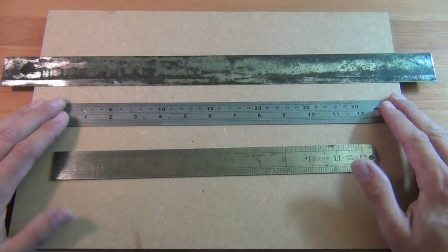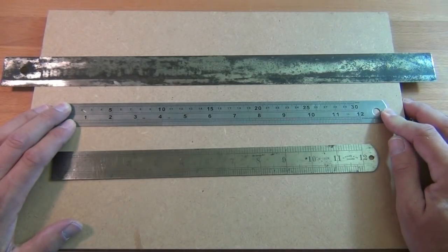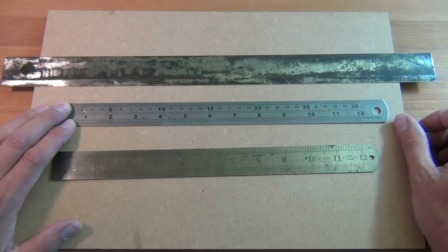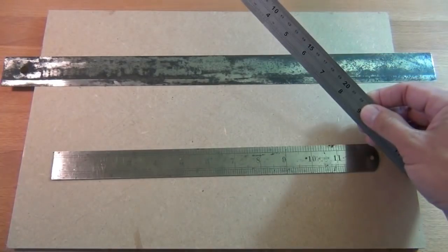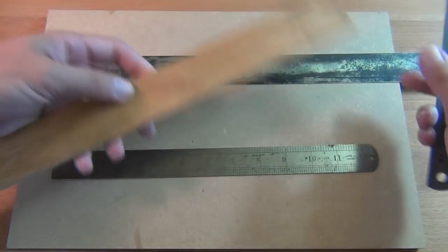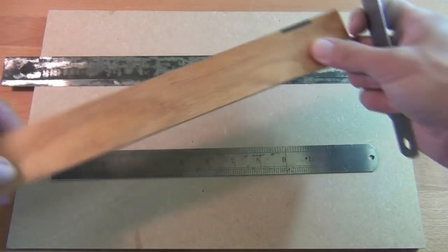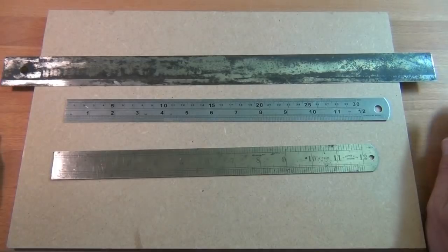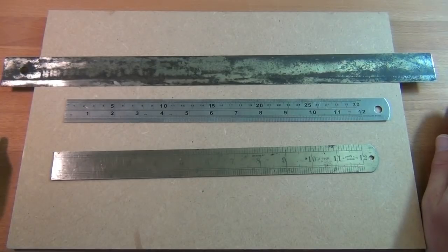Then we will have a steel rule which has two perfect straight edges on it, is parallel through its length, and we can use that to check straight edges, for example a winding stick we can now check with our ruler. And the important point about this is our reference straight edge, for as much time as possible, stays protected, wrapped up and stored carefully.